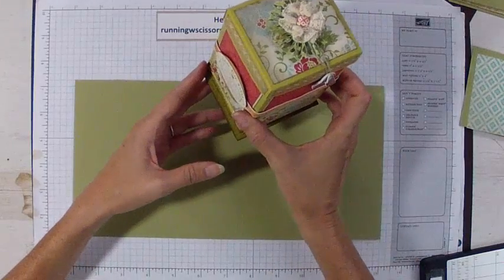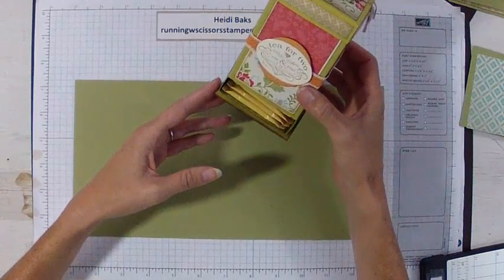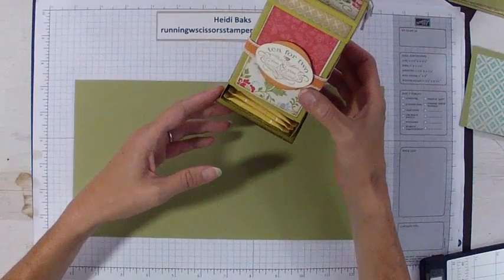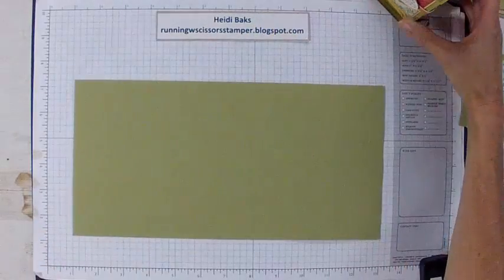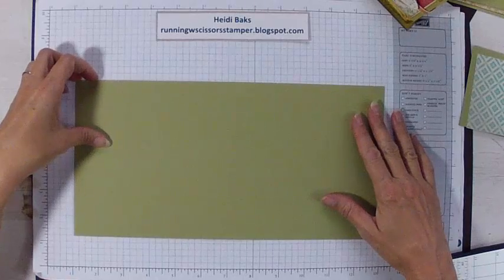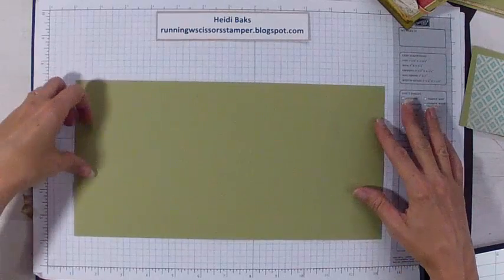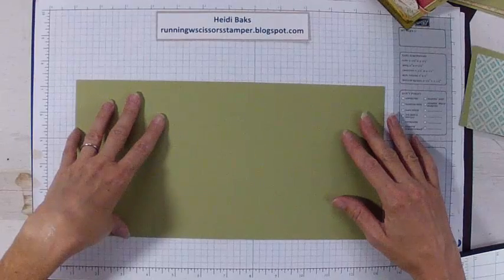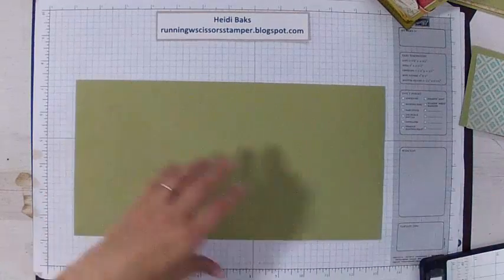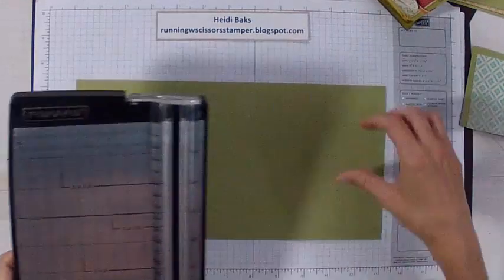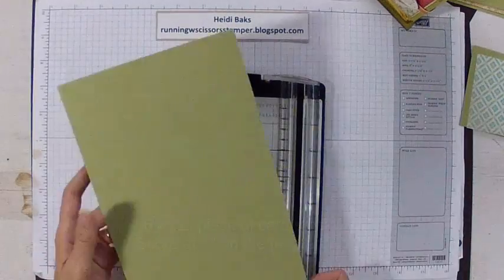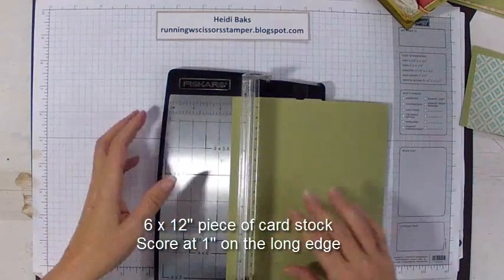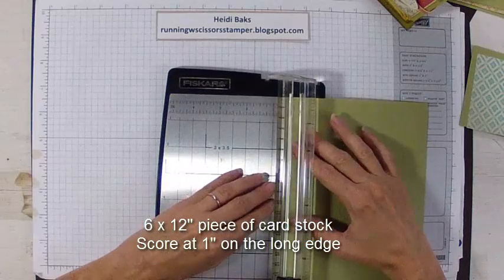This is the previous box I made and I'm going to update it with some current papers. So the first thing you do is you start with a six by twelve inch piece of cardstock for your base. You want it to be some heavier cardstock. And you take your paper trimmer and you're going to score it on the long edge. You're going to score it at one inch.